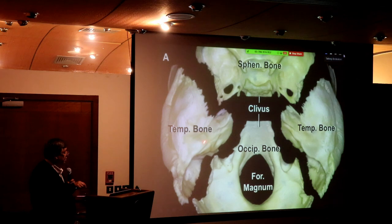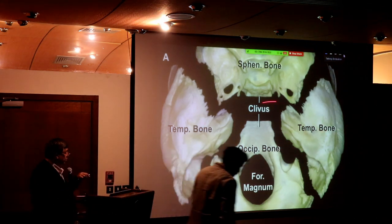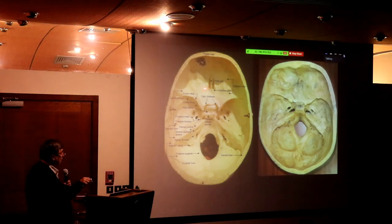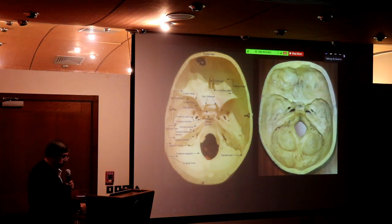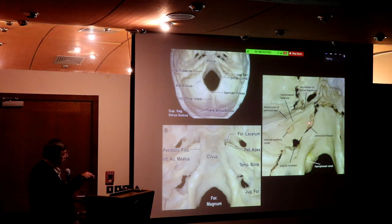These are the bones of the skull. This is the petrous bone, this is the temporal bone, the occipital bone — they join together. This part of the temporal bone joins the clivus, so we speak of petroclival. This is the petrous bone, this is the clivus, this is the petroclival junction, and you can see the clivus.